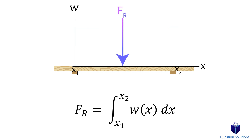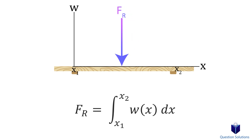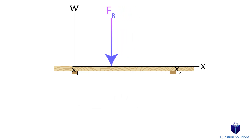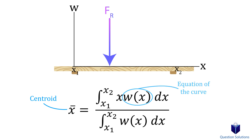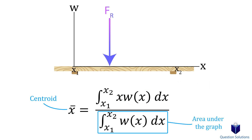Finding just the resultant force isn't enough — we also need to know where to place it. To do that, we use this equation. The X-bar tells us the geometric center of the area under the distributed load, which is where we place our resultant force. Here, X represents the variable in our equation. This part is the equation of our curve, and the bottom is the same integral we used before — in other words, it's the area under the graph.